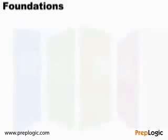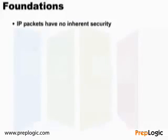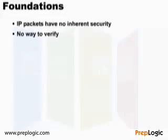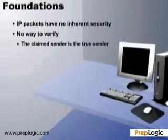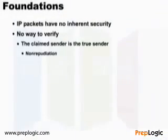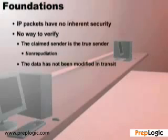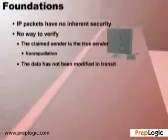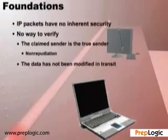The big problem with TCP/IP is that IP packets have no inherent security. Particularly, there is no way to verify that the claimed sender is the true sender — this is known as non-repudiation. In other words, we can send data on our network in such a way that the sender cannot deny they were the original sender of that information. The second problem is that the data hasn't been modified in transit, and we need to be able to verify that. There is no way to determine if someone has actually accessed the data, changed it, and then forwarded that information on, which could be critical in many scenarios.